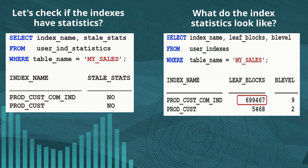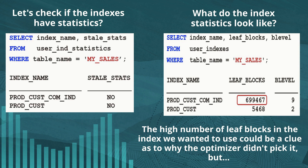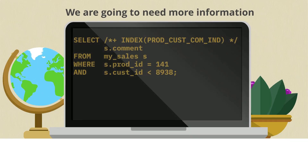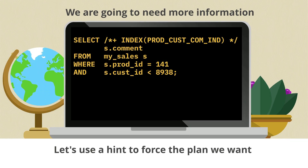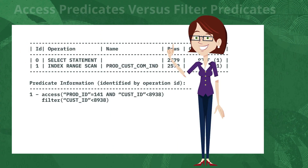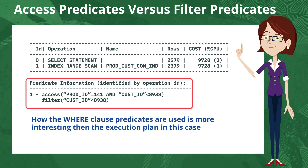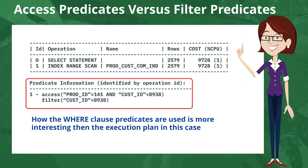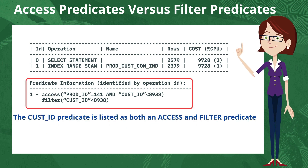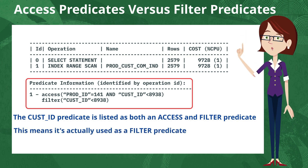Let's take a look at what the statistics actually are. We'll notice there's a high number of both leaf blocks and B-levels for the index that we were expecting to use, and so perhaps that's a clue about why the optimizer didn't pick it. But we're going to need more information, so let's use a hint to force the plan that we actually want. We're not so much interested in the plan itself, as it's a rather straightforward index range scan. What we're more interested in is the predicate information underneath the plan. This shows how the where clause predicates are going to be used by the optimizer in that execution plan. We have both an access predicate and a filter predicate listed, and the customer ID is listed as both access and filter predicate, which actually means it's being used as a filter predicate and only the prod ID is being used as an access predicate.